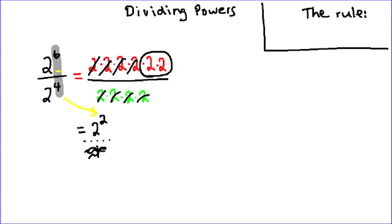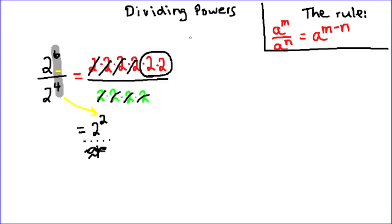From that we can get a rule for dividing powers. If I have a to the power of m divided by a to the power of n, as long as the bases are the same, I have a to the power of m minus n. So I can subtract. We can use this to simplify different expressions that have powers with the same bases.